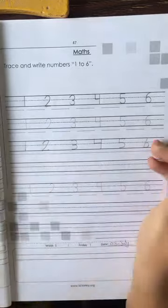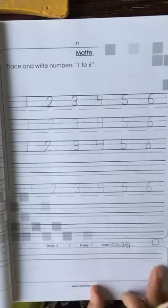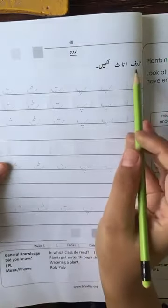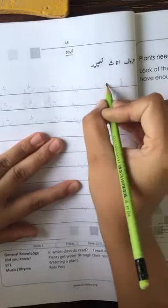Now complete this class by yourself with the help of your parents. Week third, Friday third July. Now turn the page, page number 48, subject Urdu. Write the letters alif to bay. Trace them.